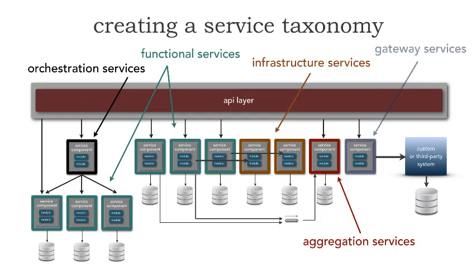A fifth kind of microservice is a gateway service — shown here in blue — which typically fronts third-party or custom systems and applications. Gateway services handle the transformation: protocol transformation and message enhancement or message transformation necessary to communicate with a particular third-party system through a RESTful API layer.